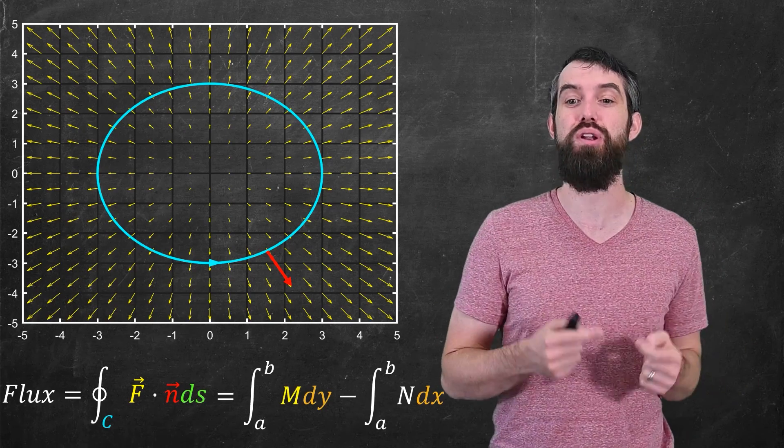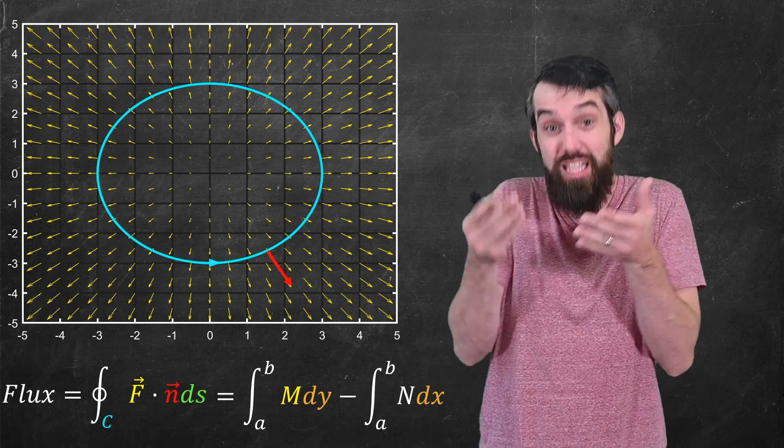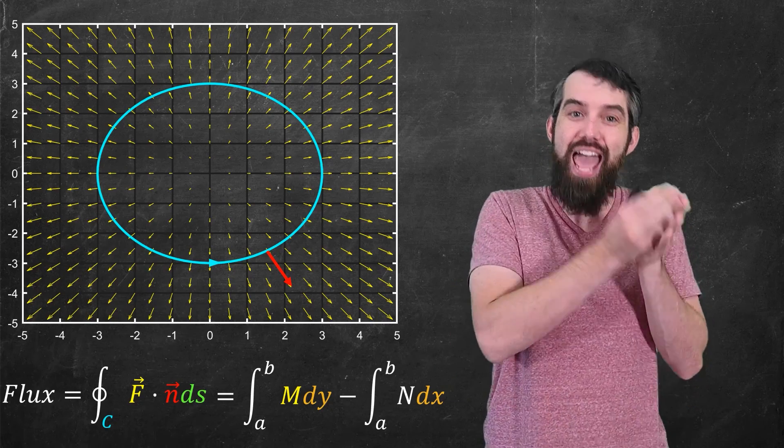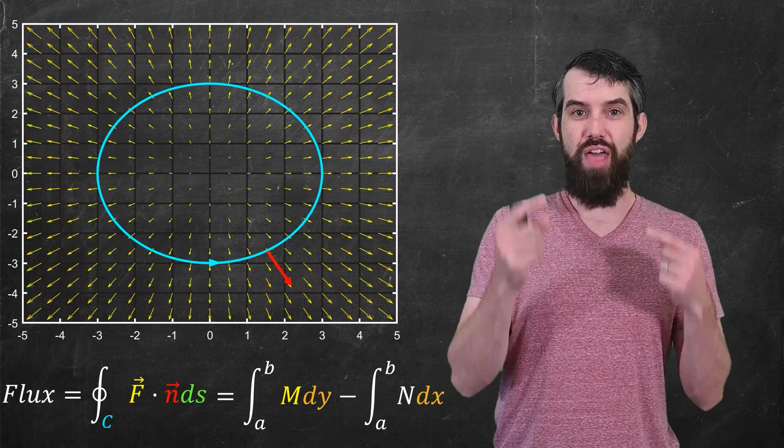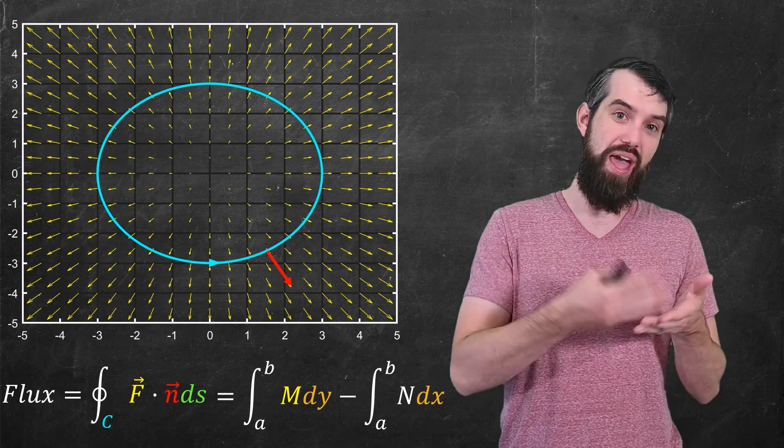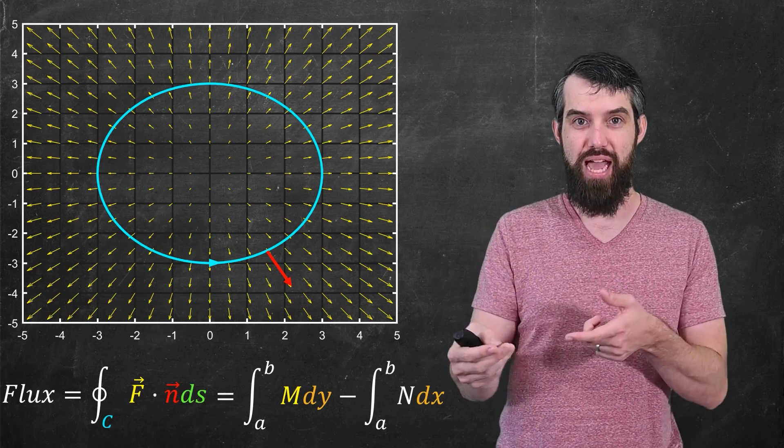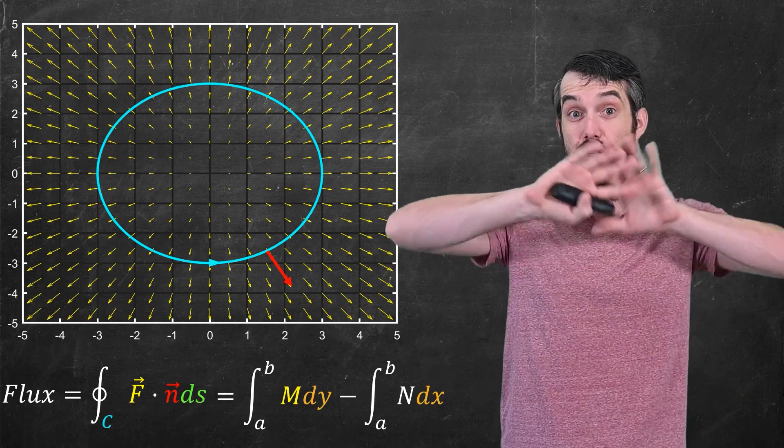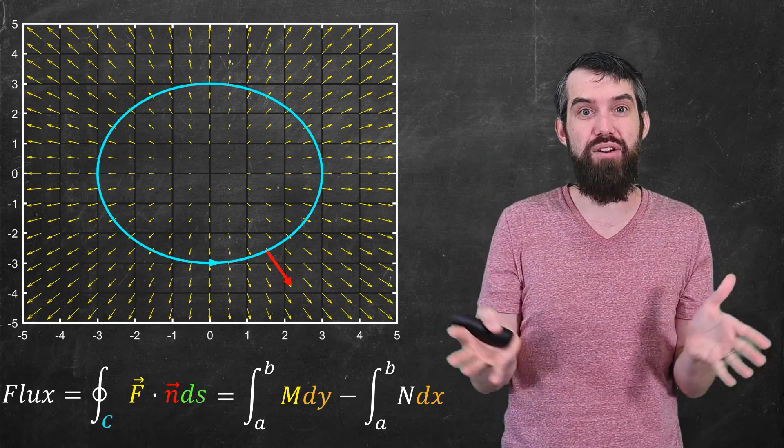And for completeness, I'll just put up the formula that we computed in the previous video. If you have a specific parameterization, and you know your field can be described as m in the i-hat and n in the j-hat, then this can be computed by the integral of m dy minus the integral of n dx.